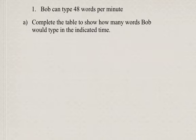So here's the solution to the problem where Bob could type 48 words per minute, and you're asked to complete a table of values showing how many words he would type in each time.